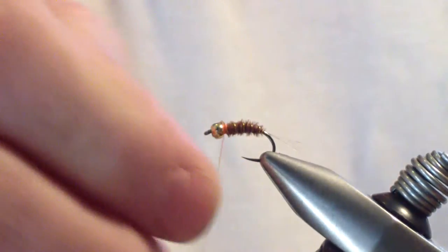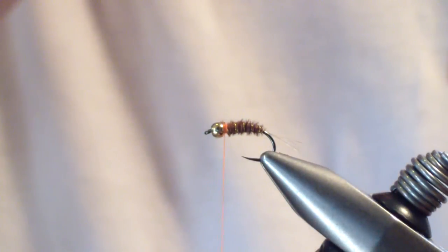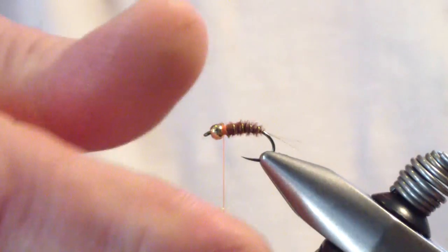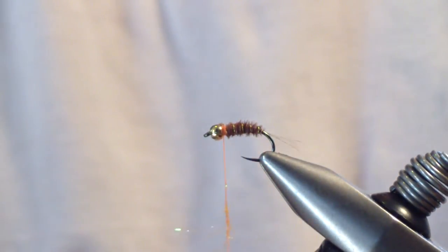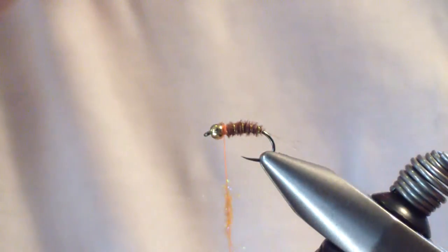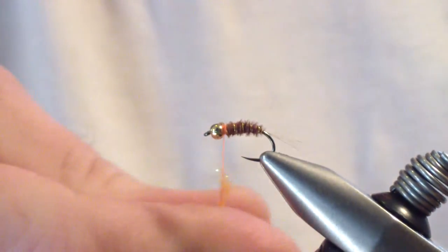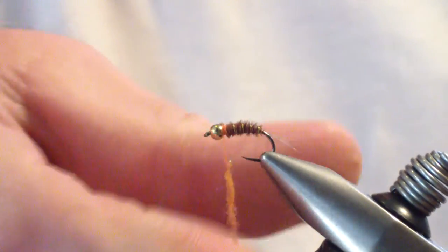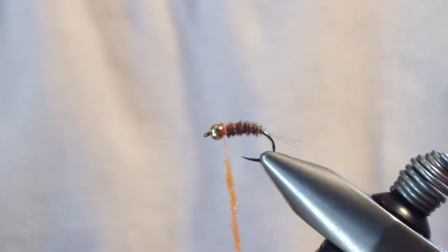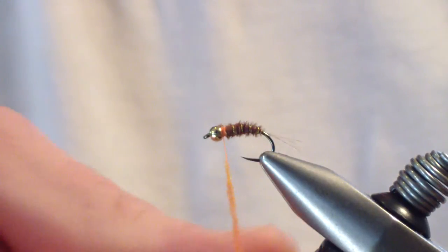And at this point you're going to apply your hot spot. For this pattern my favorite hot spot is the ice dub in UV shrimp. It's UV pink shrimp or shrimp pink. I think it's more of an orange personally. But this is the color that seems to do the best for me.